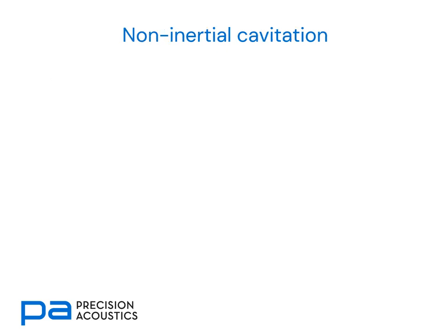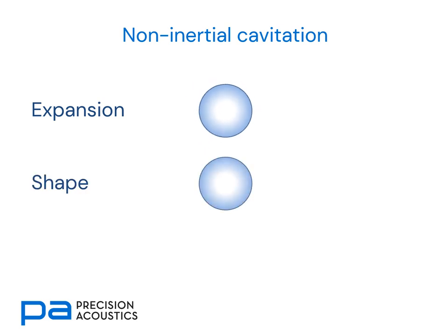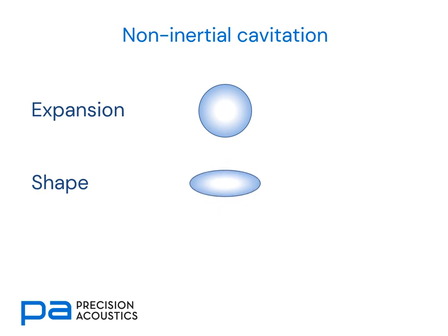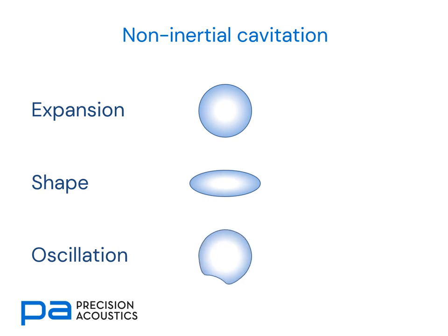Beginning with non-inertial cavitation, we're looking at the response of a bubble to an external ultrasonic wave. This could be the simple expansion and contraction in response to the compression and tensional phases. Interactions with ultrasonic waves could also cause shape changes, so here we could see a bubble oscillating backwards and forwards between an ellipsoidal and a spherical shape, but more complex shapes with higher modal orders are also possible. We could also be looking at changes on the surface of the bubble, seeing an oscillation that propagates around the circumference of the bubble.